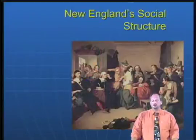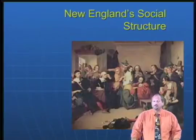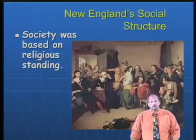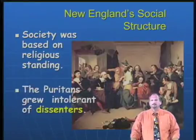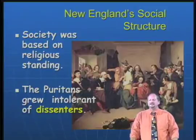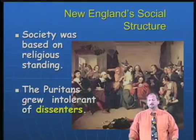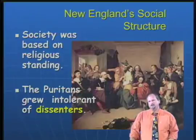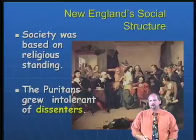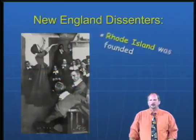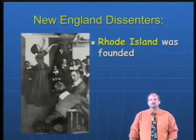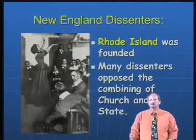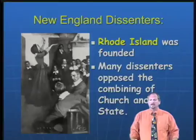When it came to New England's social structure, New England was settled by the Puritans who sought freedom from religious persecution, and therefore their society was going to be based on religious standing — the higher you were in the church community, the higher you were in the community. The Puritans were intolerant; they did not like people who dissented or opposed their religious beliefs, and became increasingly intolerant of those who wanted a separation of church and state. Rhode Island was founded by dissenters who wanted that separation and did not think the church should play a dominant role in government.